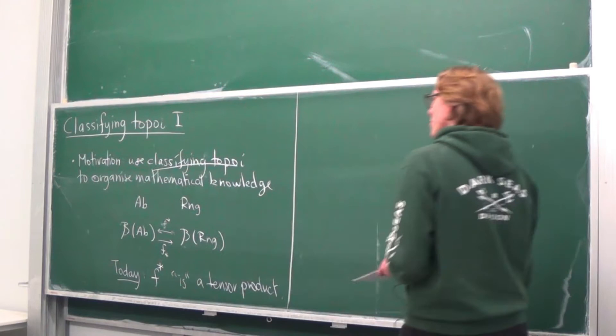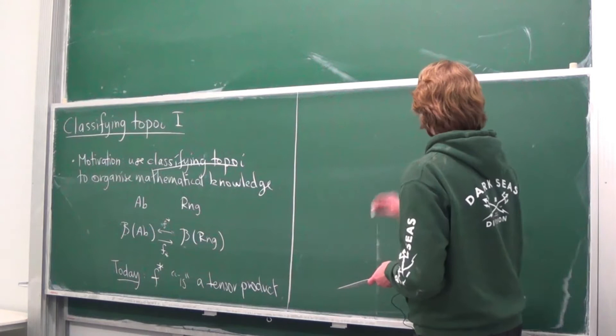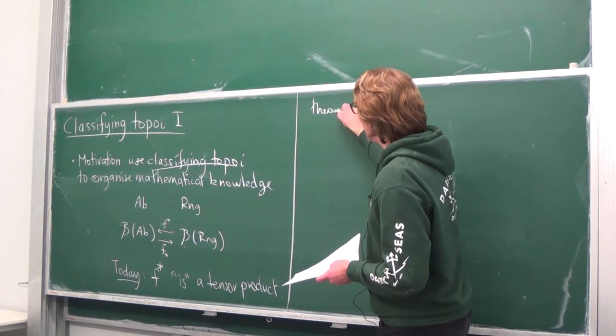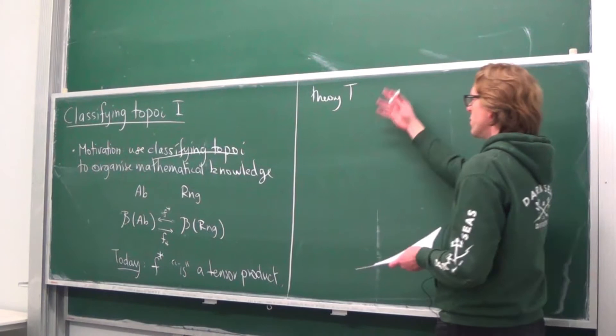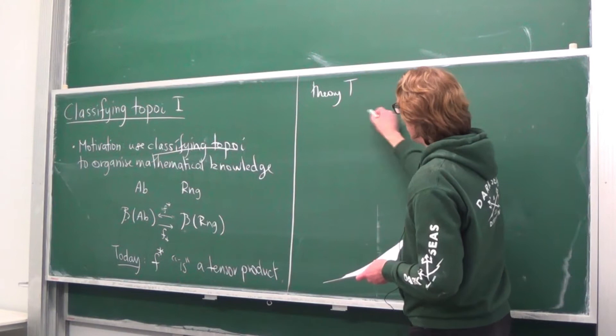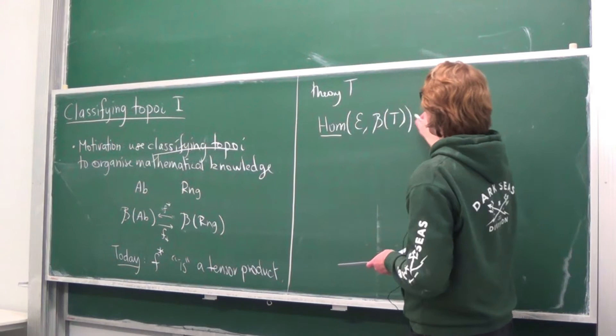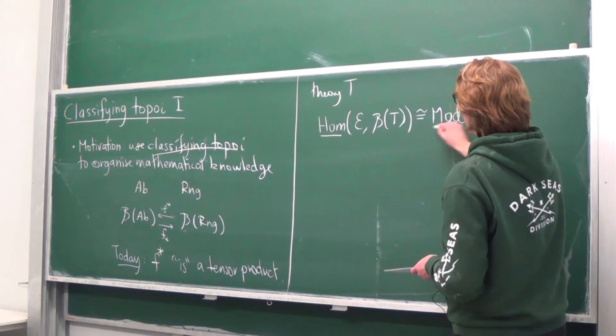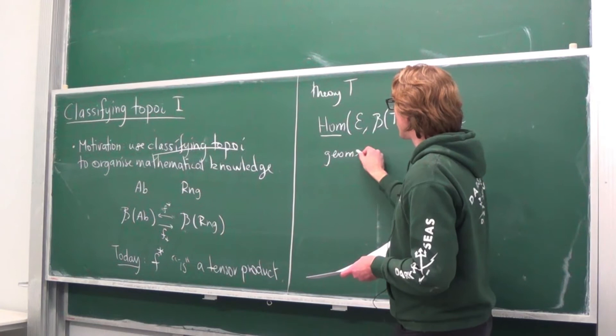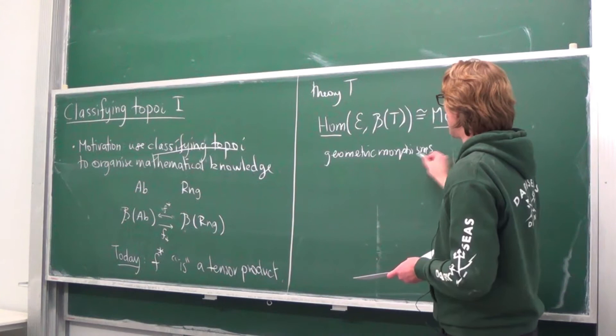This is the first of maybe three talks on classifying topoi, so let me briefly repeat what a classifying topos is. Given a geometric theory T — say abelian groups or rings — a topos B(T) is a classifying topos if there is a natural equivalence of categories, for every co-complete topos E, between the category of geometric morphisms from E to B(T) and the category of models of T in E.